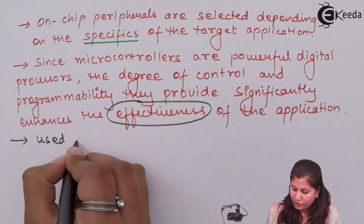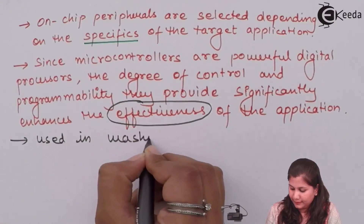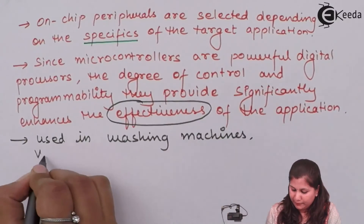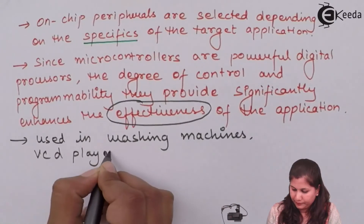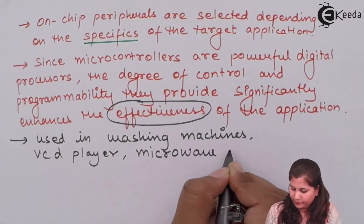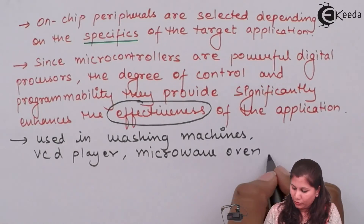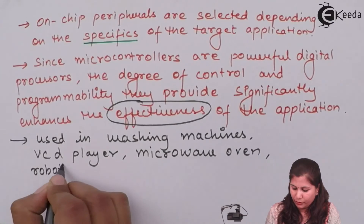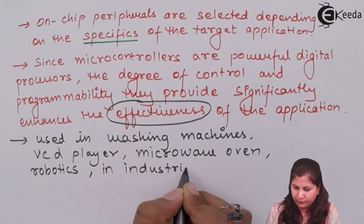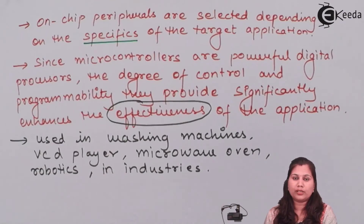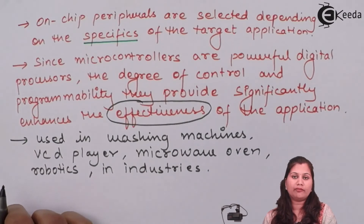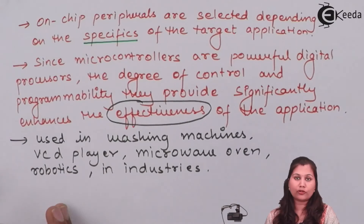These microcontrollers increase the efficiency of the application. Different applications include washing machines, VCD players, microwave ovens, robotics, and industries — these are the various applications of the microcontroller.